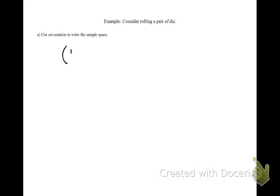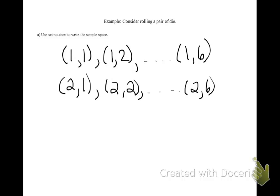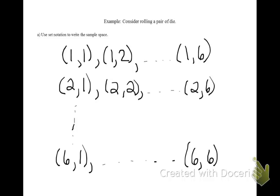Consider rolling a pair of dice. Let's use set notation to write out the sample space. For our first roll, we could roll a 1, and on the second roll we have the option of rolling a 1, a 2, all the way up to a 6. We could also have rolled a 2 on our first roll, and then on the second roll, you could roll a 1, a 2, all the way up to a 6. Repeating this pattern, your first option could be rolling a 6, and then your second roll could be a 1, all the way up to rolling a 6 on both.